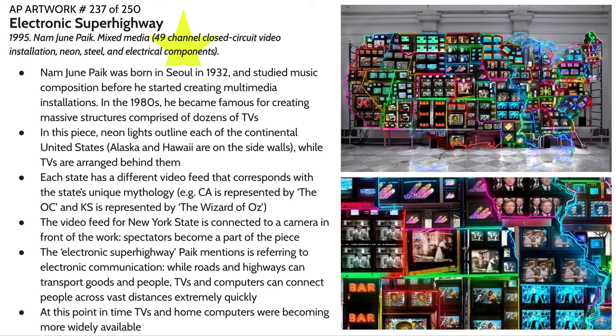At this point in time, TVs and home computers are becoming more widely available. A flat screen television in the 90s could cost up to five thousand dollars; nowadays it's relatively easy to get one for under 500. So it was very expensive to put together these kinds of installations.